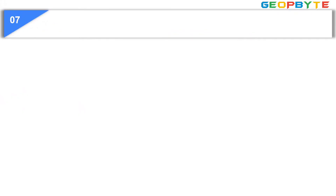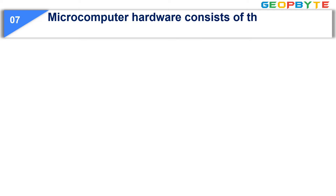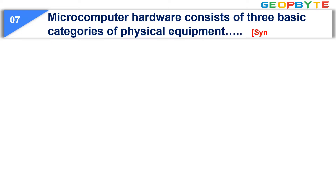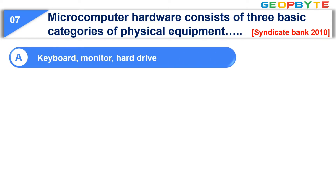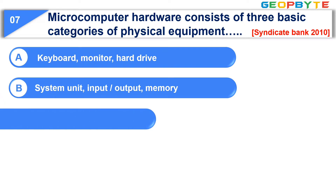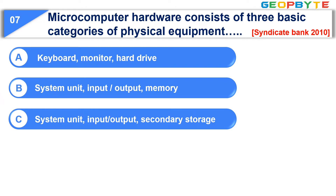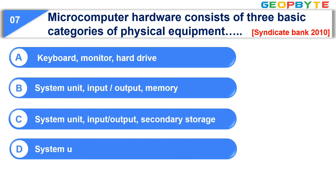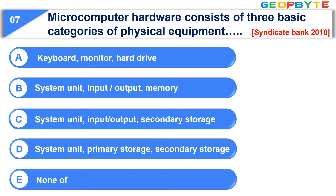Moving to question number seven. Micro computer hardware consists of three basic categories of physical equipment. Option A: Keyboard, monitor, hard drive. Option B: System unit, input or output, memory. Option C: System unit, input output, secondary storage. Option D: System unit, primary storage, secondary storage. Option E: None of these. The correct answer is option C: system unit, input unit, output unit, storage device.